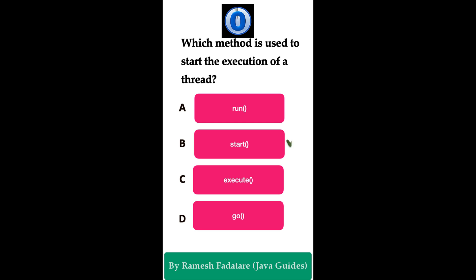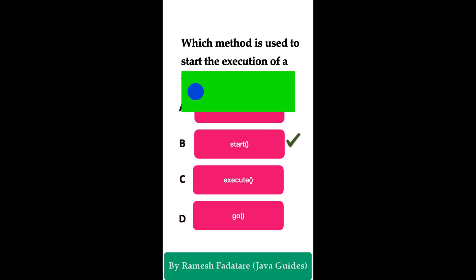The correct answer is the start() method. The start() method in Java is used to start the execution of a thread. When you call the start() method, the thread state moves from the new state to the runnable state, and the Java Virtual Machine invokes the thread's run() method. This allows the thread to execute its task in parallel with other threads. Remember: to start the execution of the thread you call start(), and the JVM will internally call the run() method to execute the task.